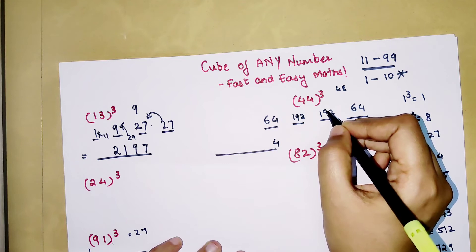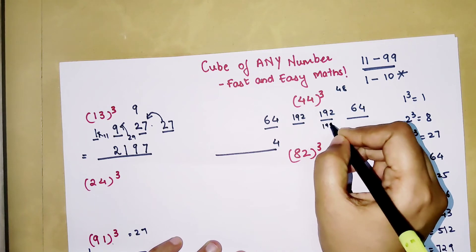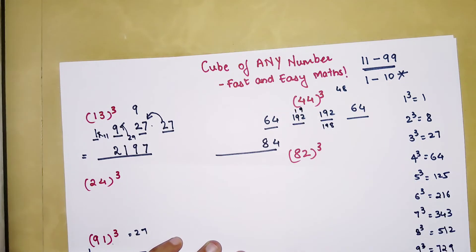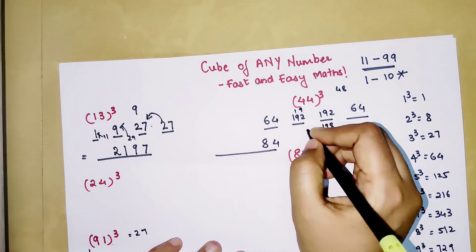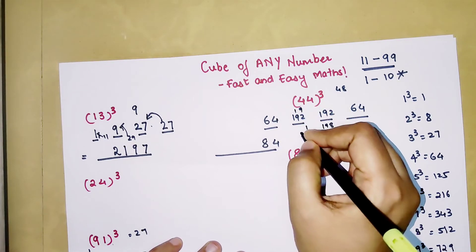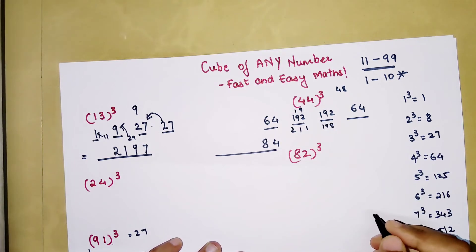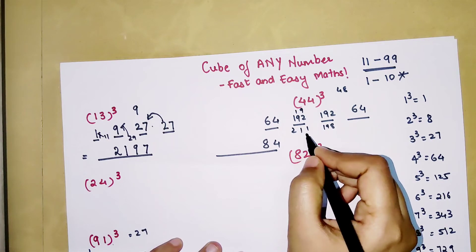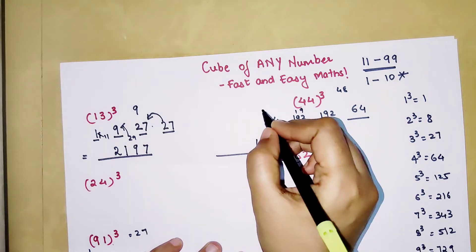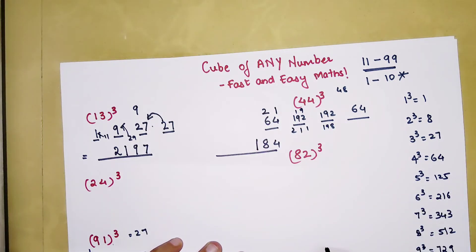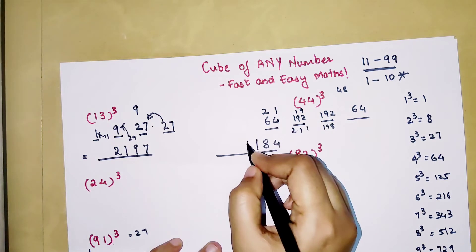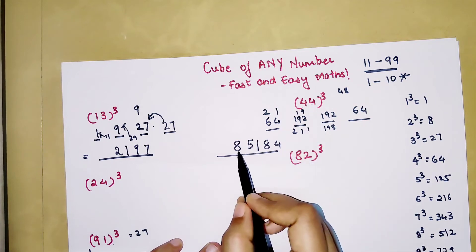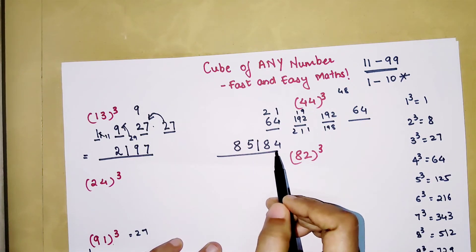Then 6 when added to 192 you get 198. So 8 will be taken from 198 and 19 will get added to 192 which is going to get you 211. From this number 211 we will just take the unit digit which is 1 and then 2 and 1 will be written over here. So when you add 1 plus 4 you get 5 and 2 plus 6 you get 8. So your answer for 44 cube is 85,184.